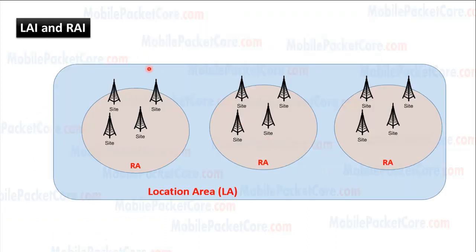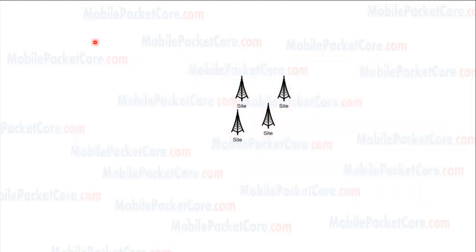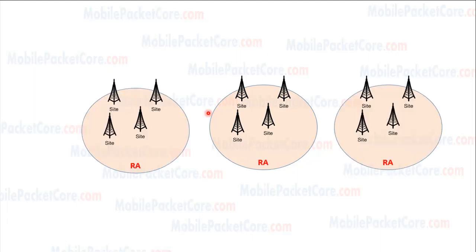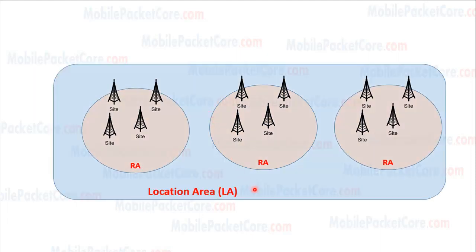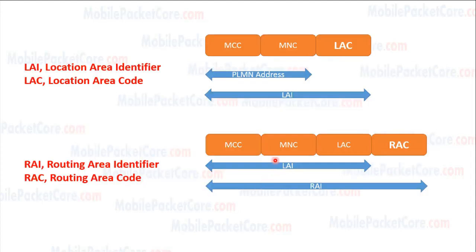Now let's talk about the Location Area Identifier and the Routing Area Identifier. Every group of sites are grouped into an area called the Routing Area. And every group of routing areas are grouped into a bigger area called the Location Area. The Location Area Identifier, LAI, globally identifies every location area. It consists of the PLMN in addition to the Location Area Code, LAC.